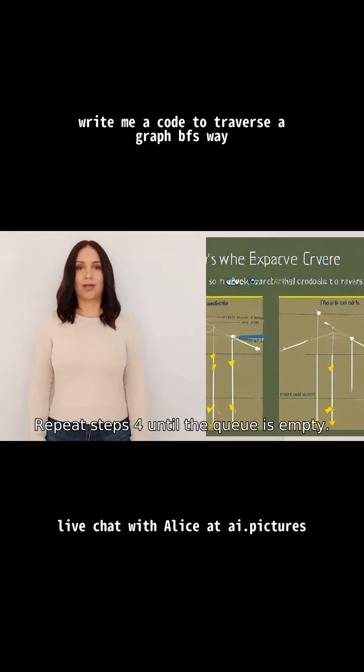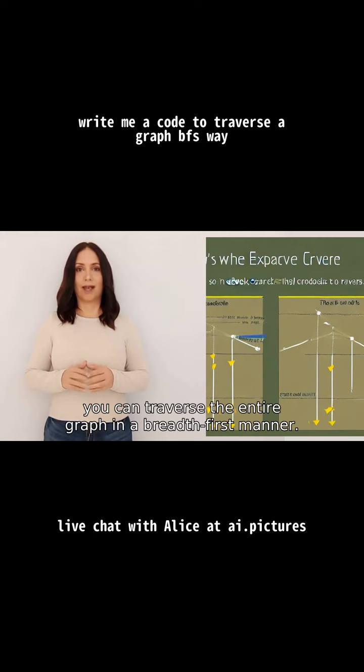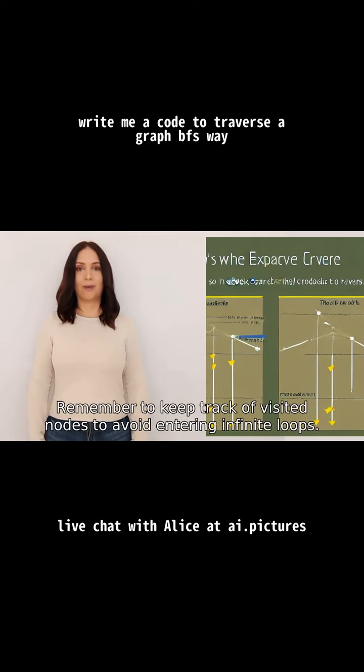Step 5: Repeat step 4 until the queue is empty. By following these steps, you can traverse the entire graph in a breadth-first manner. Remember to keep track of visited nodes to avoid entering infinite loops.